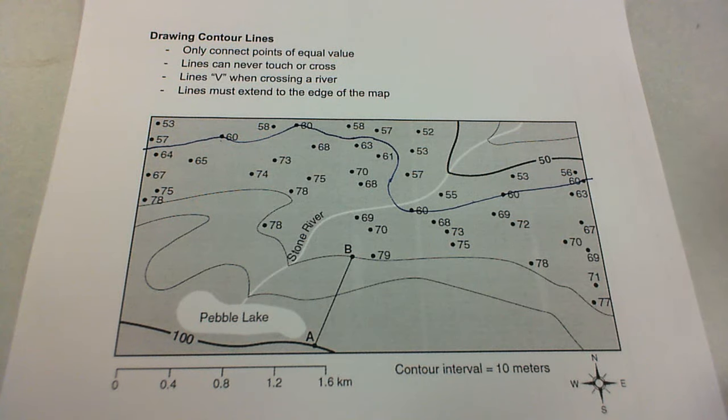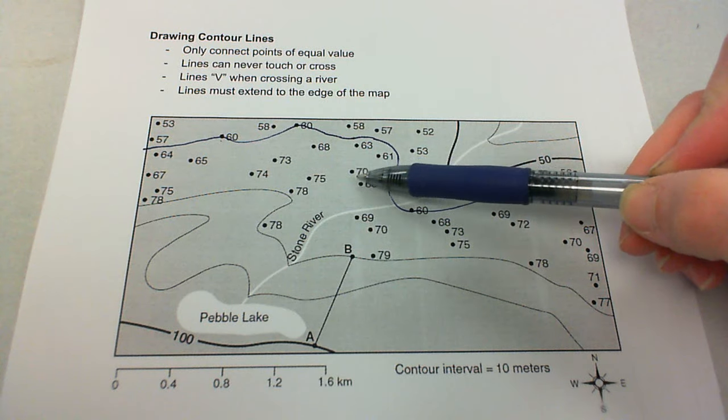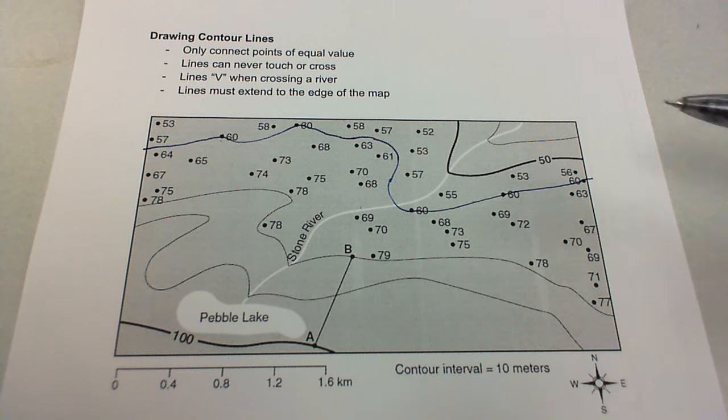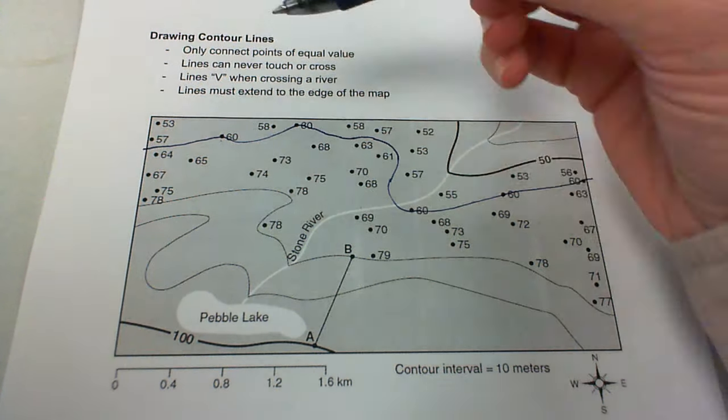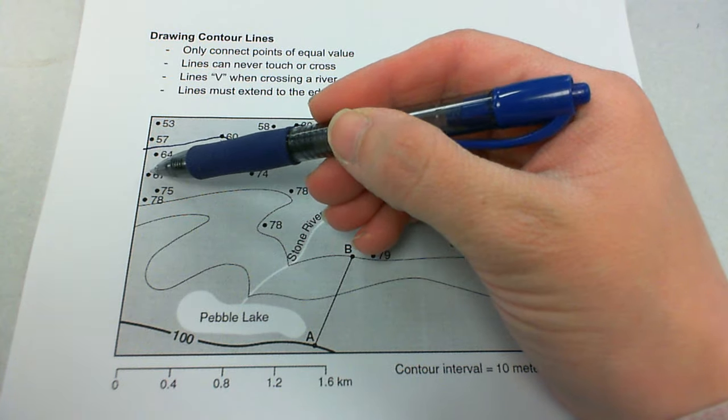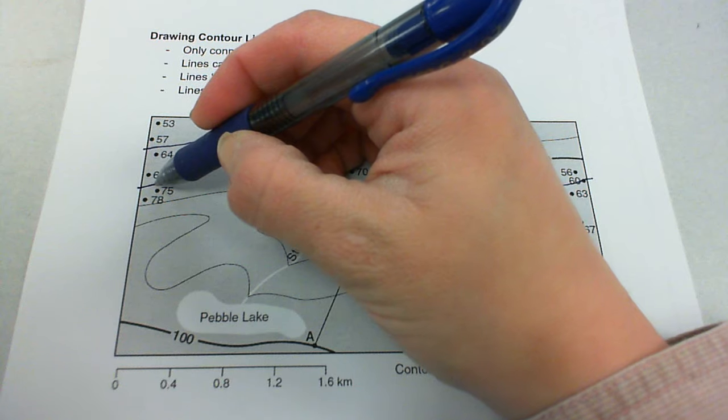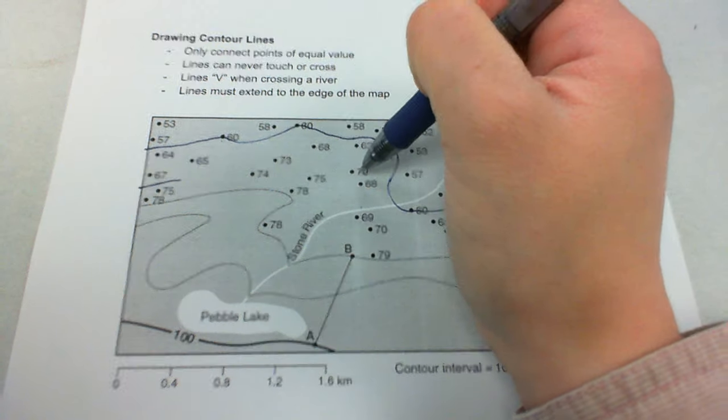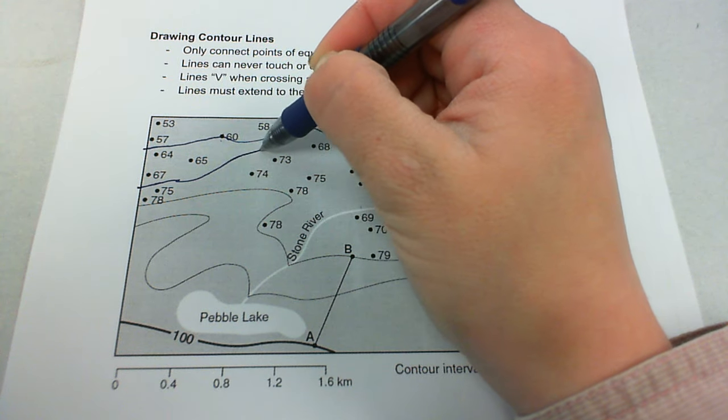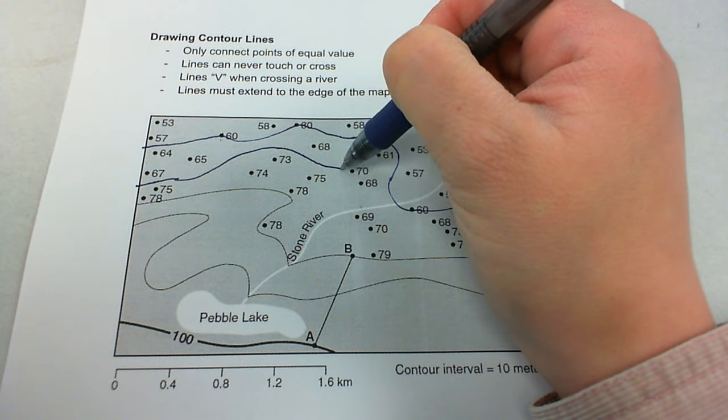The next line that I'm going to draw is 70. So again, we'll just check out the map for all of the 70s. There's one right there. And there's one down here. There's one right there. So we'll start over on the left again and try to figure out where we can come in between from the edge of the map. We've got 64 and 67. So that doesn't work. 67 and 75. That's right there. So we're going to come in between here for 70. And we've got to get to this 70. So we're going to have to go up between 65 and 74. Above 73. Between 68 and 75. There's 70.